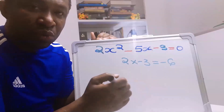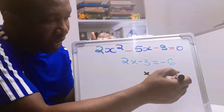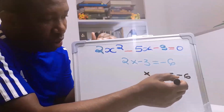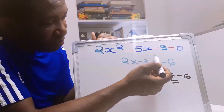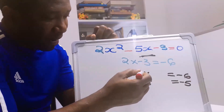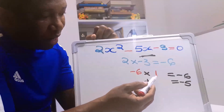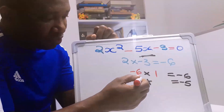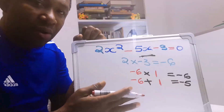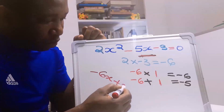Next, we think of two numbers: when we multiply them we get minus 6, and when we add them we get a replacement for the middle term, which is minus 5. The two numbers are minus 6 and 1. Minus 6 multiplied by 1 gives minus 6, and minus 6 plus 1 gives minus 5. So instead of minus 5x, we now have minus 6x plus x.